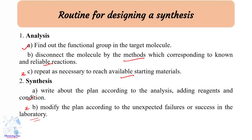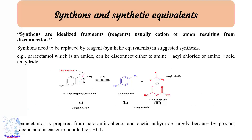Now we take a closer look at synthons and synthetic equivalents. Synthons are idealized fragments — usually cations or anions — resulting from the disconnection. Synthons need to be replaced by reagents in the suggested synthesis. For example, paracetamol, which is an amide, can be disconnected either as amine plus acyl chloride or amine plus acid anhydride.